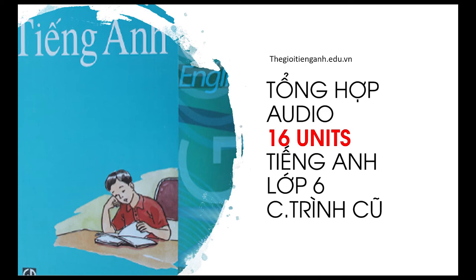Listen and write the number of the picture. He has short hair. He has a round face. He has a big nose. He has full lips. He has short hair. He has an oval face. He has a small nose. He has thin lips. She has long hair. She has an oval face. She has a big nose. She has thin lips. She has long hair. She has a round face. She has a big nose. She has full lips.